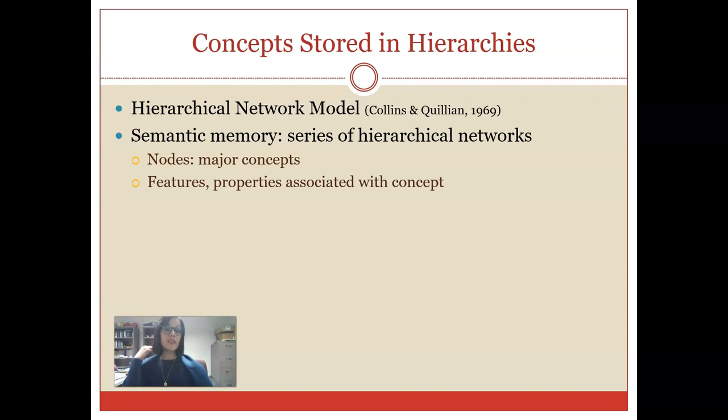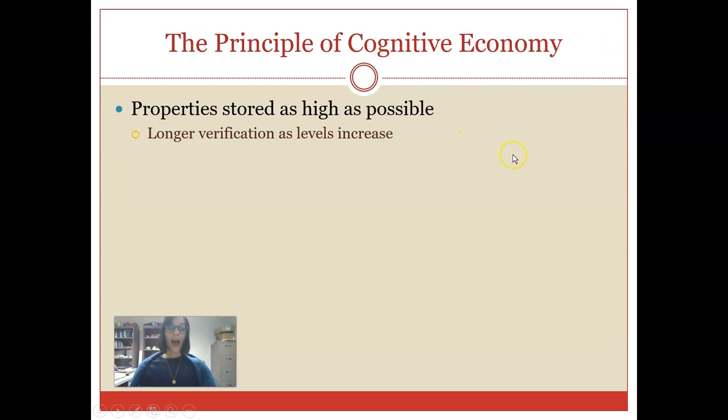Concepts can be thought of as being stored in these hierarchical networks. We are first going to start with something called the Hierarchical Network Model by Collins and Quillian back in 1969. They basically believed that semantic memory is nothing more than a series of these hierarchical categorical networks. They're made up of a few different things. First, you're going to be looking at nodes, and those are going to be particular major concepts. Branching off from those nodes are various features or specific properties that are associated with that concept. I realize that this all seems really vague, so one of the best ways that we can understand it is by actually looking at an example.